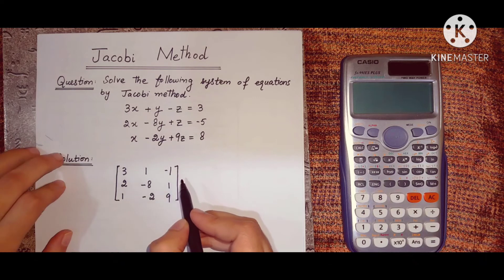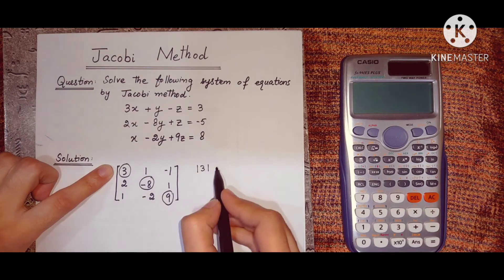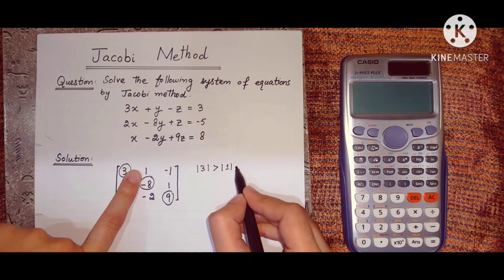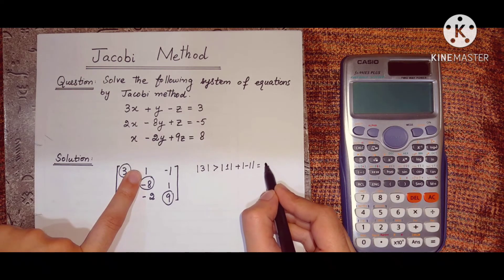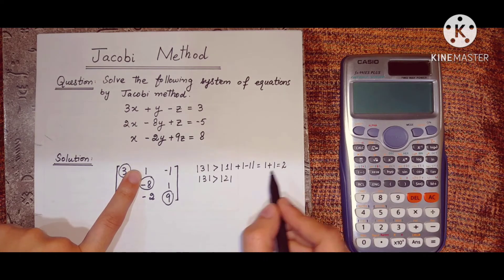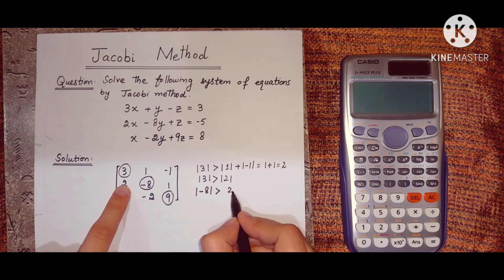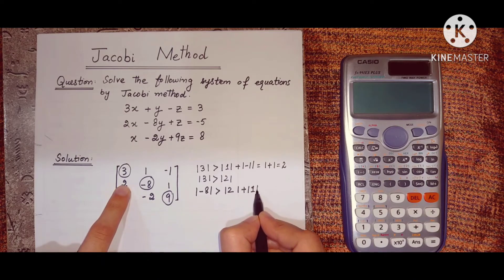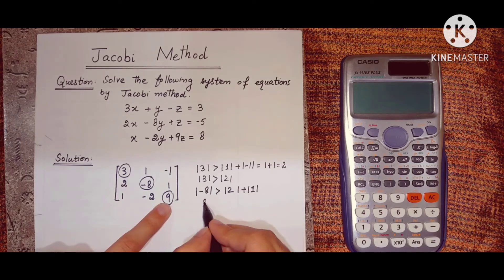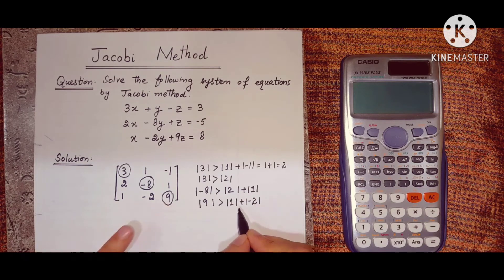Our system will be strictly diagonally dominant when the absolute value of each diagonal element is greater than the sum of the absolute values of the remaining elements in its row. For the first row: |3| > |1| + |-1| = 2. For the second row: |-8| > |2| + |1| = 3. For the third row: |9| > |1| + |-2| = 3. All conditions are satisfied, so we are good to go.